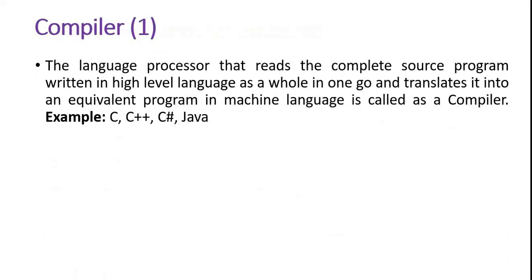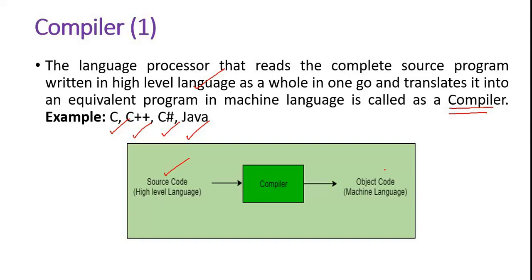First, we will discuss the compiler. High level programming languages like C, C++, C#, and Java use the concept of compiler. So you have source code and you have object code — object code is nothing but machine language. In between, we have the compiler. All three processors convert programming languages into object code, which is ones and zeros. What is the difference between compiler, assembler, and interpreter?